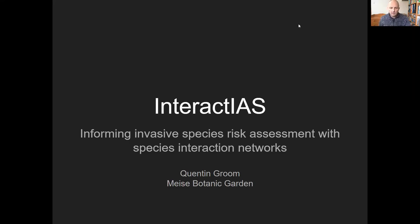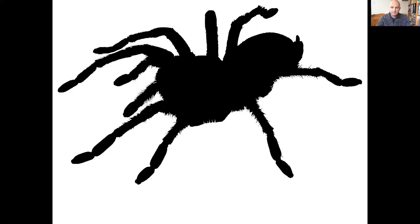Interactius is a Jupyter Notebook to inform invasive species risk assessment. Imagine if pet shops in your country were importing spiders and you wanted to know what potential risks of this are — what might happen if these were either released or escaped into the natural environment?